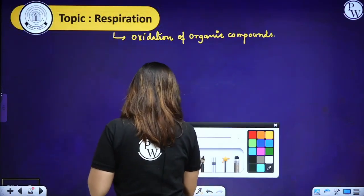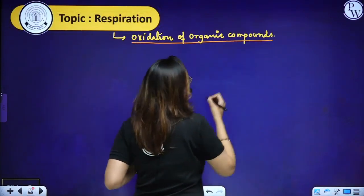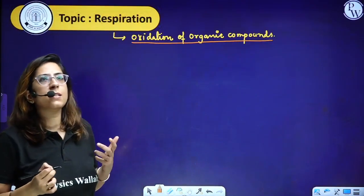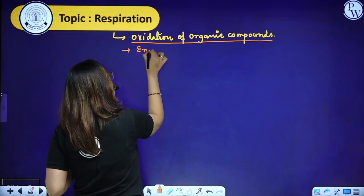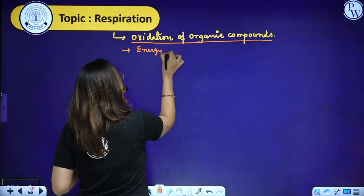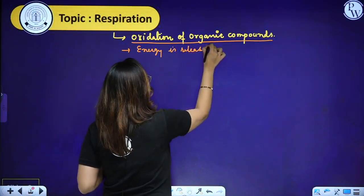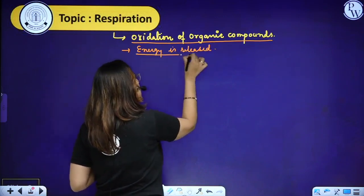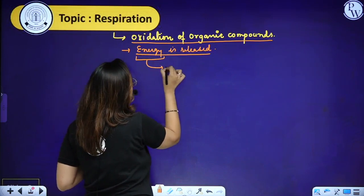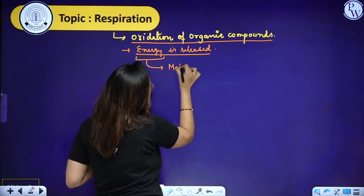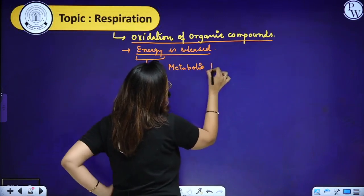So there are organic compounds, and what we do is oxidation. With the help of oxidation, energy is released. This energy is used for various metabolic processes.